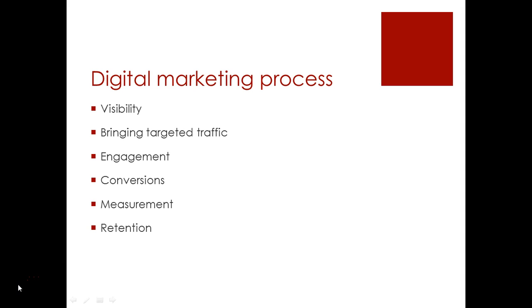Now let's understand the digital marketing process. In the digital marketing process, we talk about six things which are very important. First is visibility — when you are visible to people. After visibility, you bring targeted traffic to your website. Once targeted traffic comes, you create engagement on the website. If the user gets engaged, you then convert the user. Once converted, you measure the performance of your campaigns, and then you improve your campaigns and retain customers.